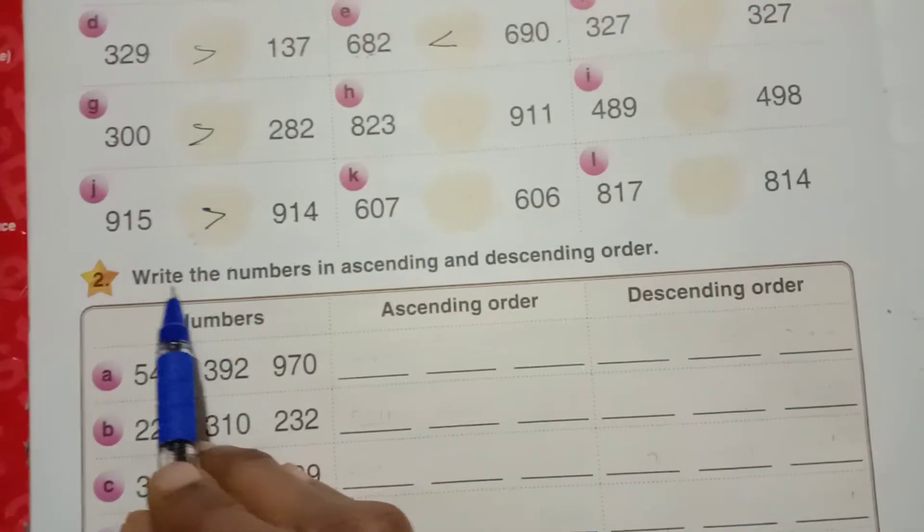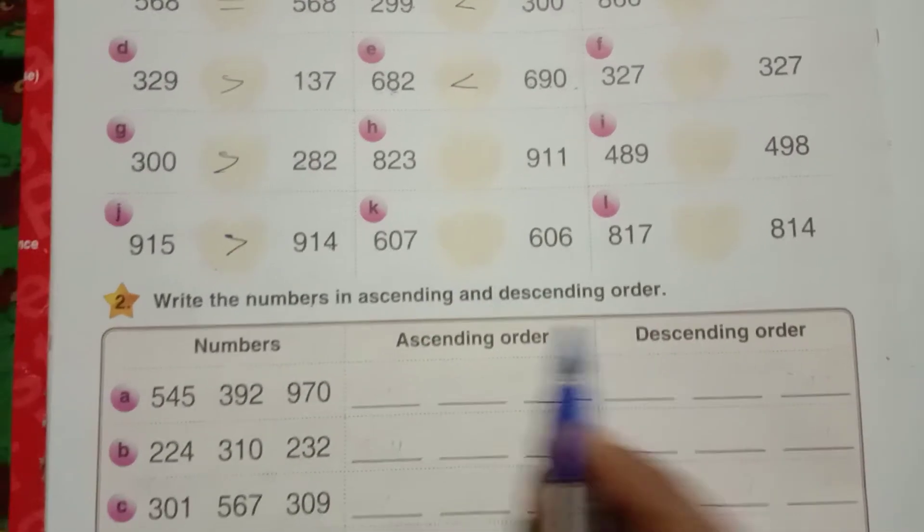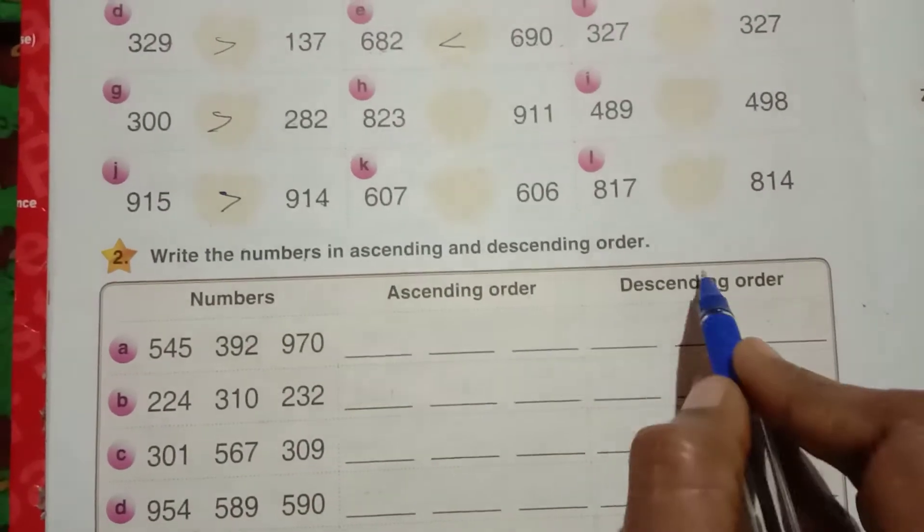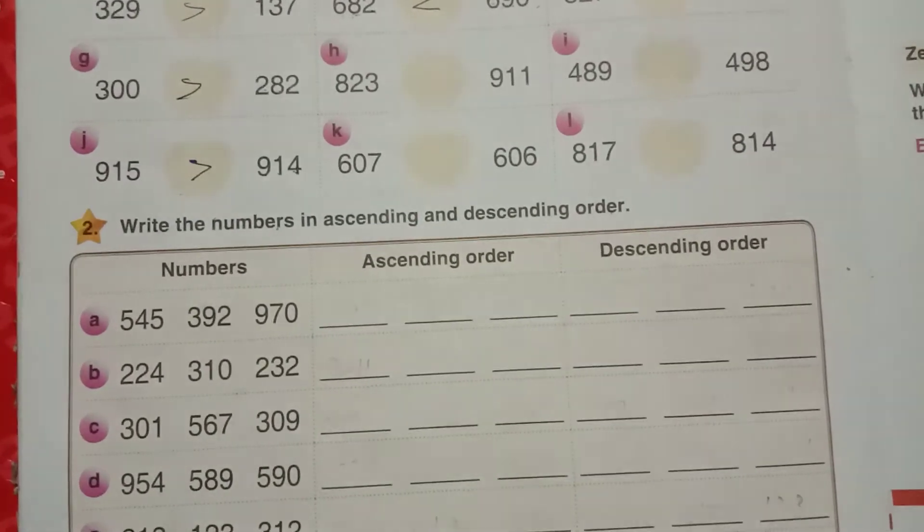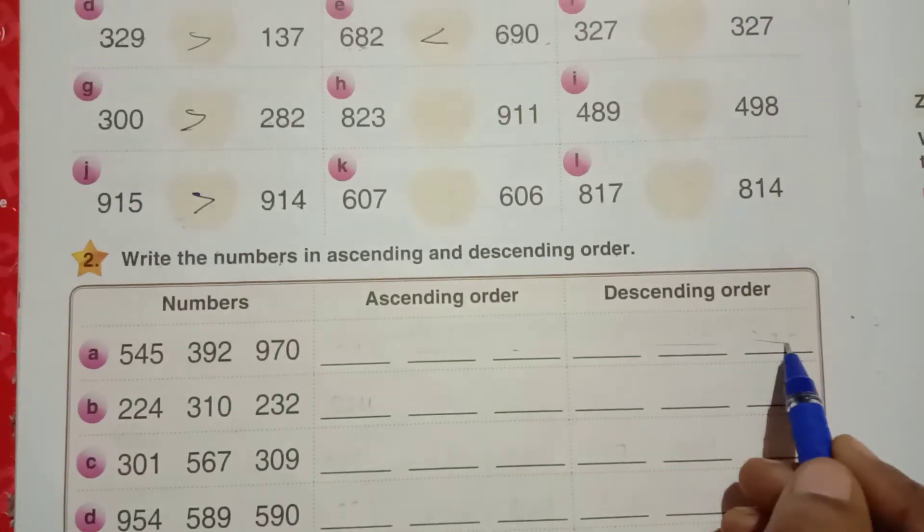Next, see here, write the numbers in the ascending and descending order. They given numbers here, they given ascending order column here, here also they given descending order column. You have to write the ascending order numbers and descending order numbers.